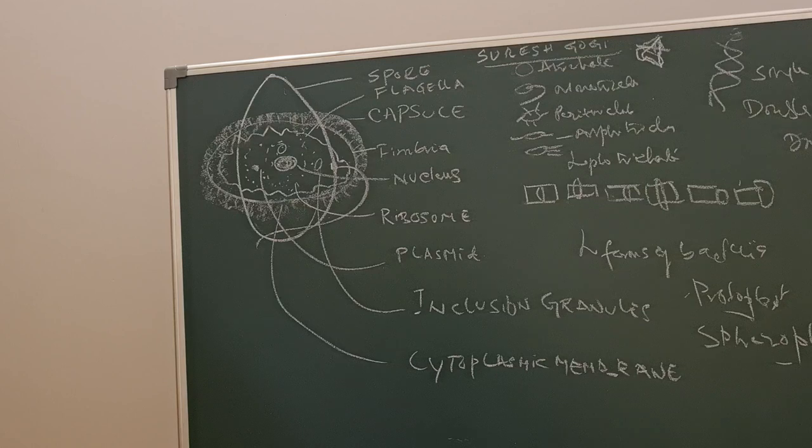Now coming to the cell wall, it is made up of peptidoglycan, consisting of N-acetylmuramic acid and N-acetylglucosamine held together by a peptide chain. It is 40 times thicker in gram-positive than gram-negative. Gram-negative has more lipids and an outer membrane made up of lipid.